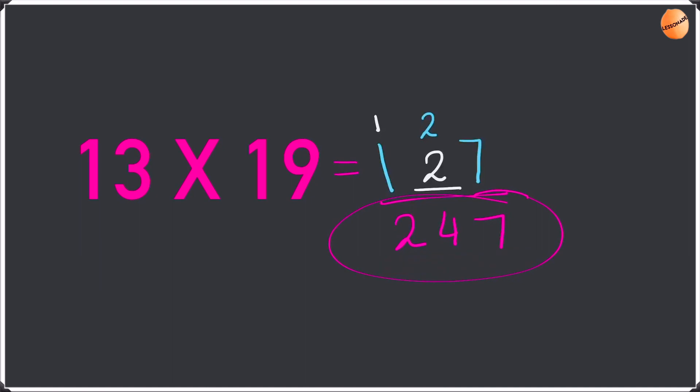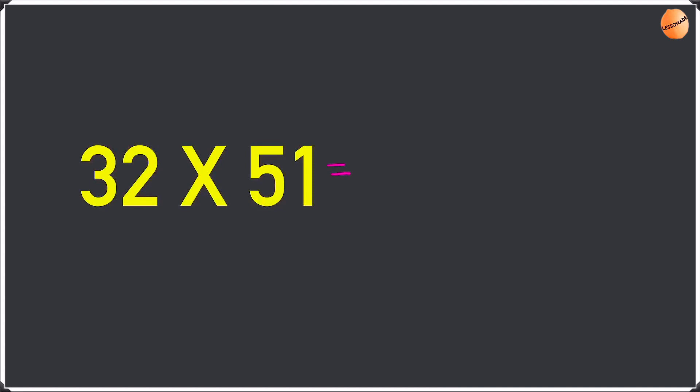Well done guys for doing that one. Now let's go on to the next example which is 32 times 51. We're going to do the same thing — multiply the last digit of both the numbers. So 2 times 1 is going to be 2. Write the dash.